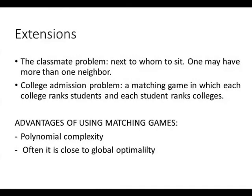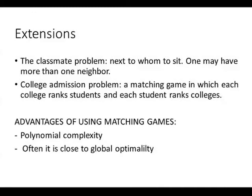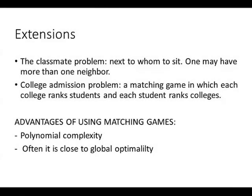There are extensions of the matching game. The first is the classmate problem: deciding next to whom to sit, which is a non-symmetrical extension since one may have more than one neighbor, unlike the monogamy of standard matching. Another extension is the college admission problem, where each college ranks students and each student ranks colleges. The advantage of using this matching game approach is polynomial complexity, unlike global optimality which often requires non-polynomial complexity. And yet, the stable matching solution very often turns out to be very close to the global optimum.